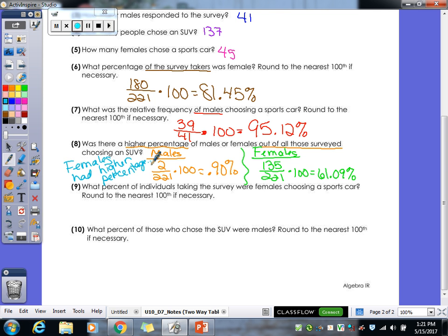Question 9: What percent of individuals taking the survey were females choosing a sports car? Again, because it says of individuals taking the survey, what is it going to be out of? 221. How many of those 221s were females picking a sports car? 45. So 45 divided by 221 times a hundred. 20.36%.